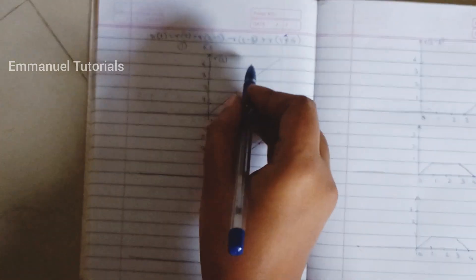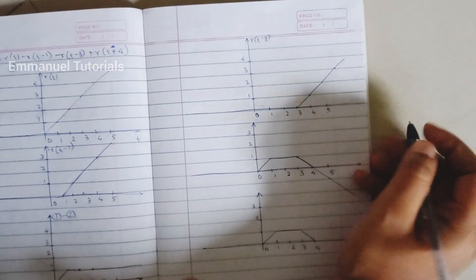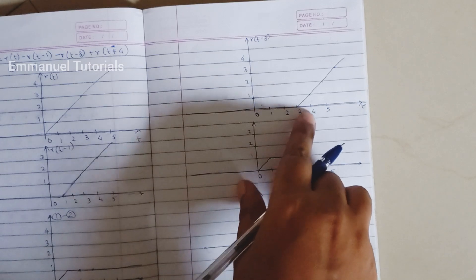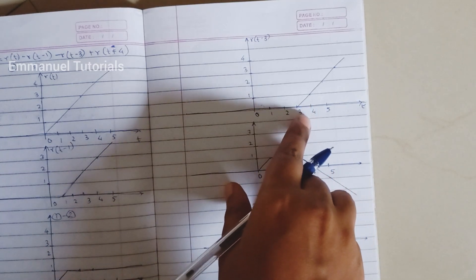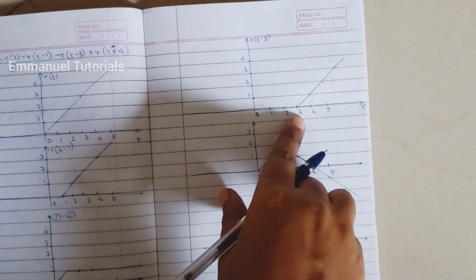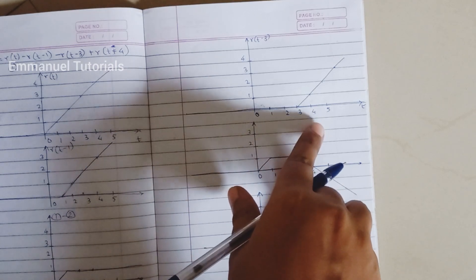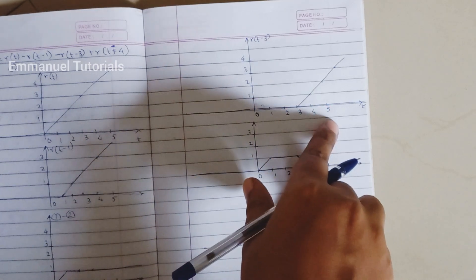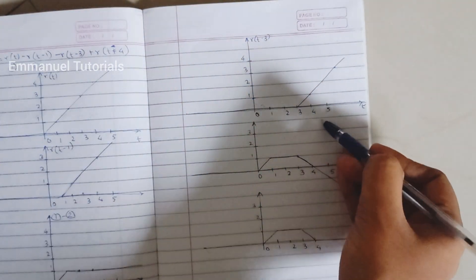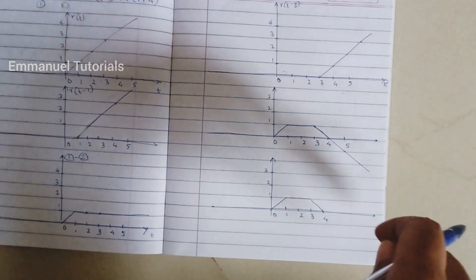The next part of our signal is r(t-3), another delayed ramp starting from t=3. The amplitudes remain the same as the original ramp but the signal starts at t=3. So at t=3 amplitude is 0, at t=4 amplitude is 1, at t=5 amplitude is 2, and so on.